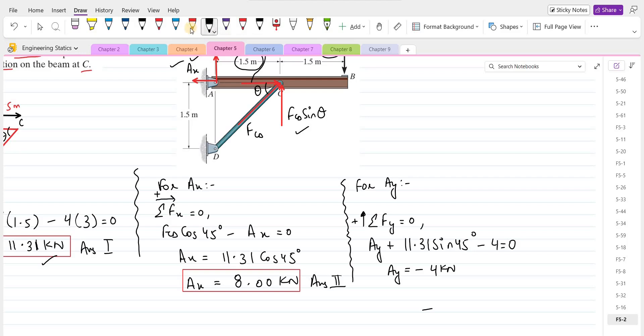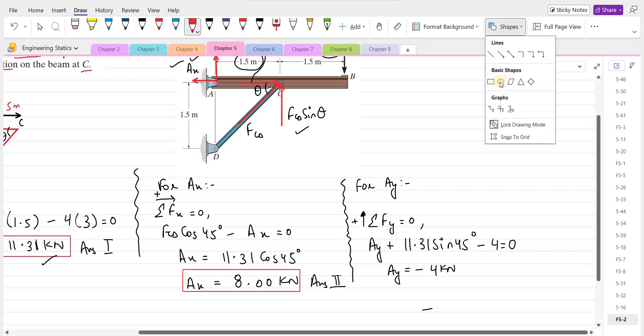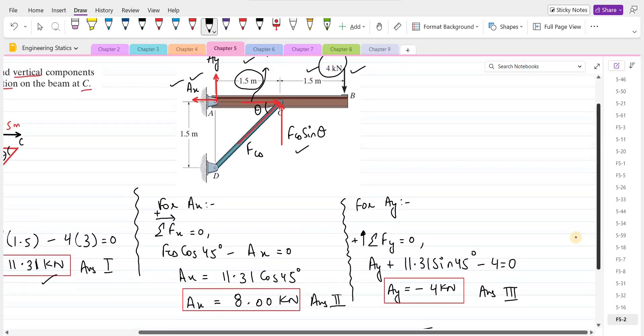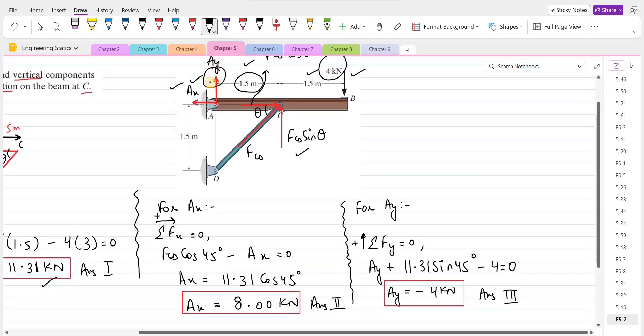You can see that we are getting a negative answer. The negative answer means that the direction we had assumed earlier for Ay force is incorrect. Earlier, we had assumed the support reaction Ay in the upward direction, but in fact, it is acting in the downward direction.